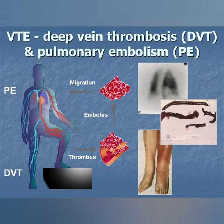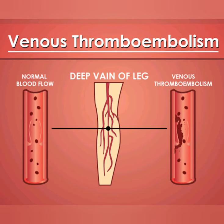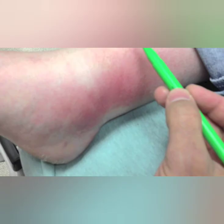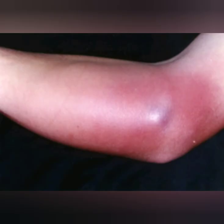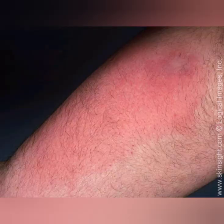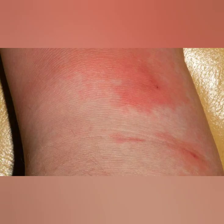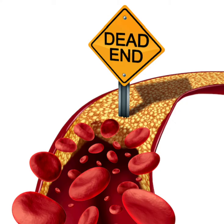Warning signs of deep vein thrombosis include pain in one leg or arm, swelling usually in one leg or arm, skin that is red or an unusual color, and warmth in the affected area. If you have any of these signs of deep vein thrombosis, you should see a doctor right away. Of note, some people with deep vein thrombosis have no signs or symptoms.